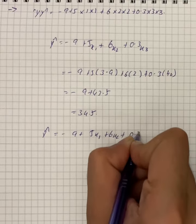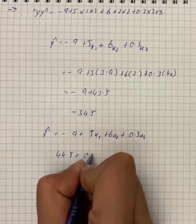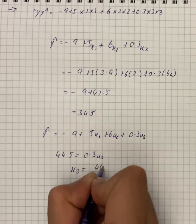On simplification we have 44.5 is equal to 0.3x₃, and then we have x₃ is equal to 44.5 divided by 0.3.